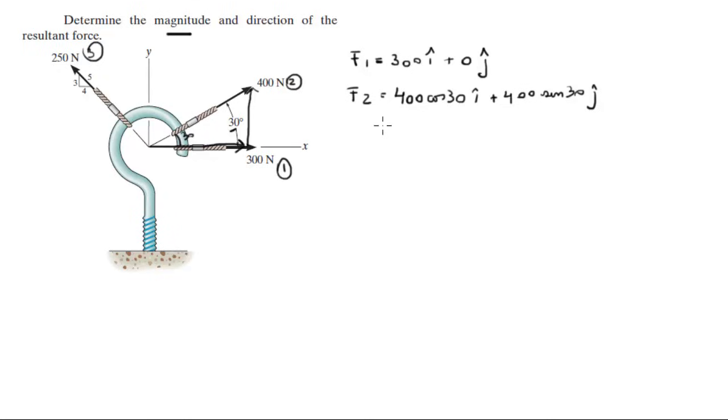So when you calculate this you get that F2 is equal to 346.4i plus 200j. Let me put them in rectangles, easier to find, and this is F2.